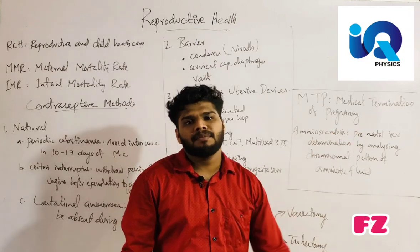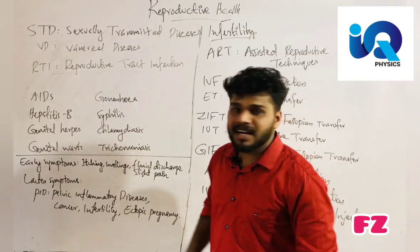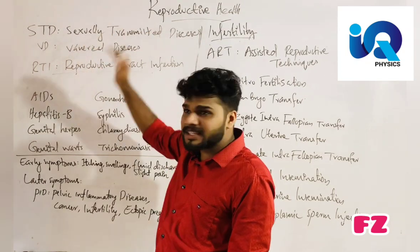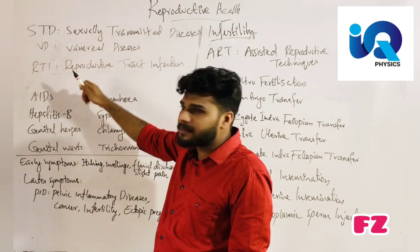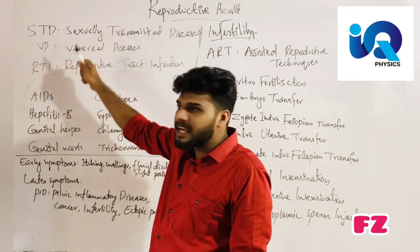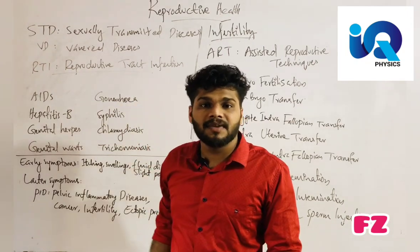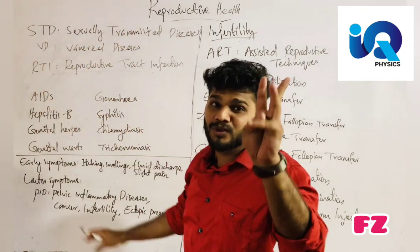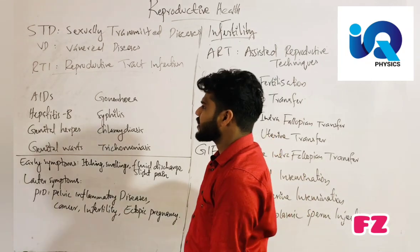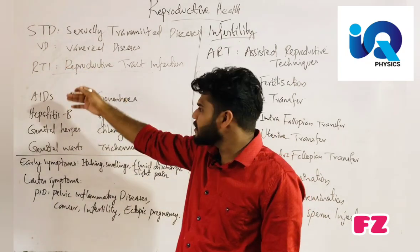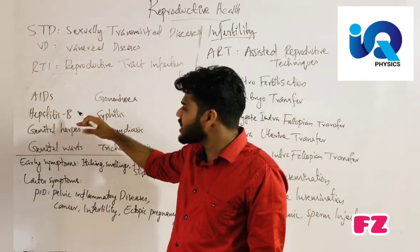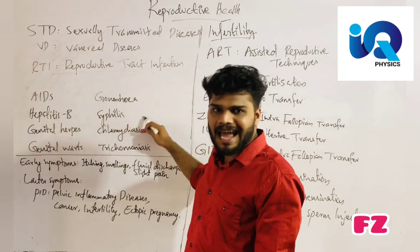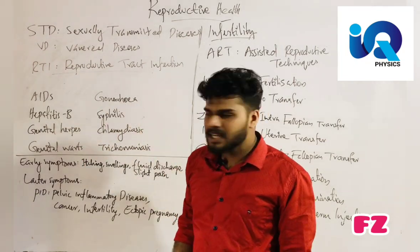The next topic is Sexually Transmitted Diseases, also called STDs or Venereal Diseases (VD), and Reproductive Tract Infections (RTI). Examples include AIDS, Hepatitis B, Genital Herpes, Genital Warts, Gonorrhea, Syphilis, Chlamydia, and Trichomoniasis.